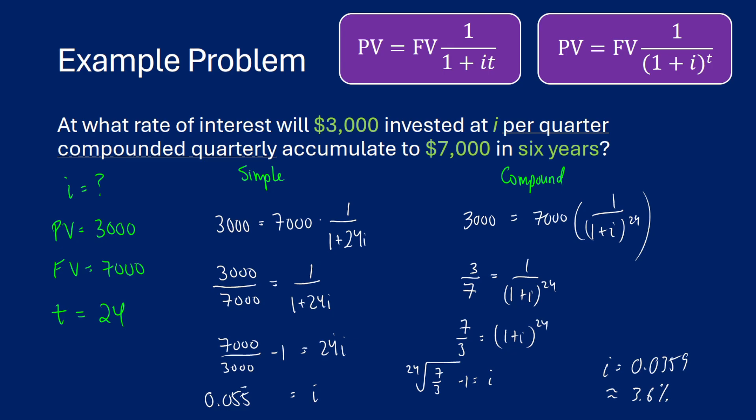So here we have about a 1.9% difference between simple and compound interest. If you have quarterly compounded interest, you'll get a little bit more because you're compounding every period — every three months in this case — you're starting with a new base value that interest is being added to. The takeaway from all of these problems is that compound interest is always better.